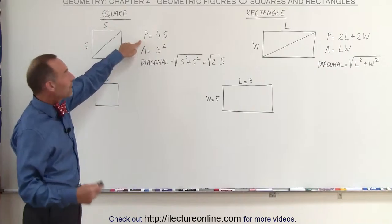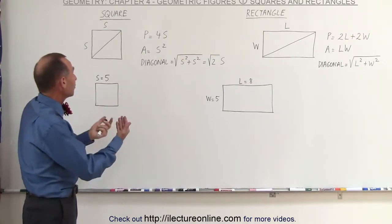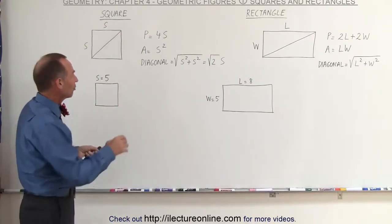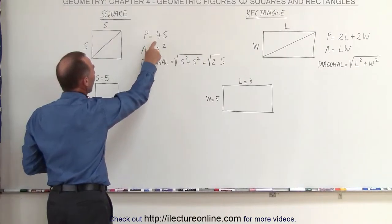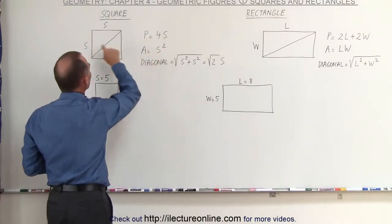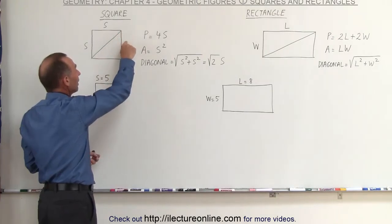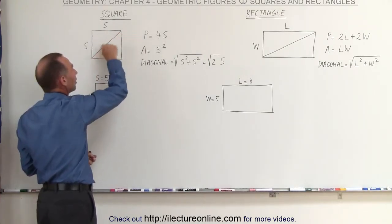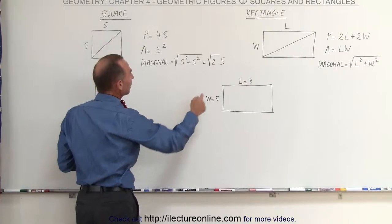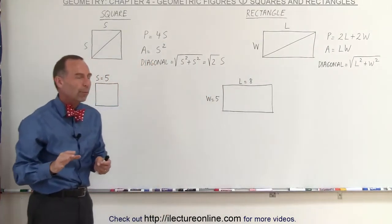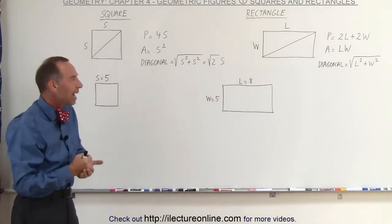To find the perimeter — I use P for perimeter and A for area — to find the perimeter of a square, since all four sides are the same and all four angles are the same, that's the definition of a square, the perimeter is simply four times the side and the area is the side times the side, or side squared. To find the distance of the diagonal, we use the Pythagorean theorem, so the hypotenuse is equal to the square root of the sum of the sides squared, which ends up being the square root of two times the side. The square root of two is approximately 1.4, so the diagonal of a square is approximately 1.4 times the length of a side.